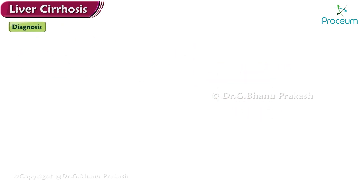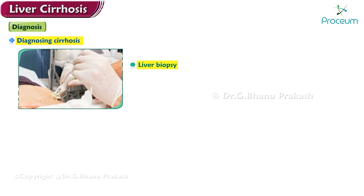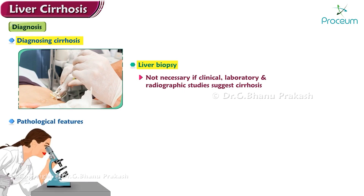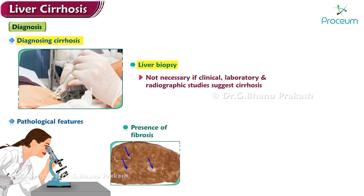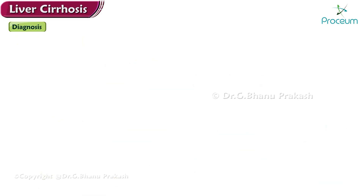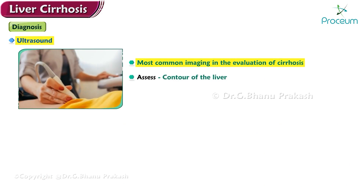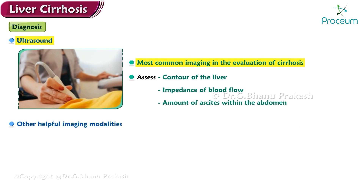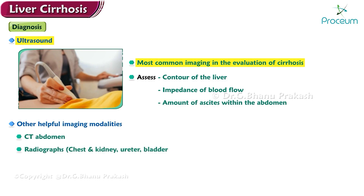Now let's talk about the diagnosis of cirrhosis. The gold standard is liver biopsy; however, it is not necessary if clinical, laboratory, and radiographic studies suggest cirrhosis. Pathological features include fibrosis, regenerating hepatic nodules, and a decreased number of septa. Ultrasound is the most common imaging modality, allowing assessment of liver contour, blood flow impedance, and ascites. Other modalities include CT of the abdomen, chest and KUB radiographs, and MRI.